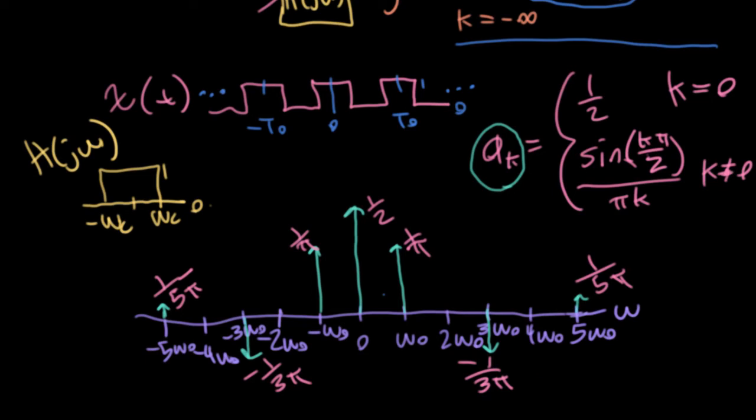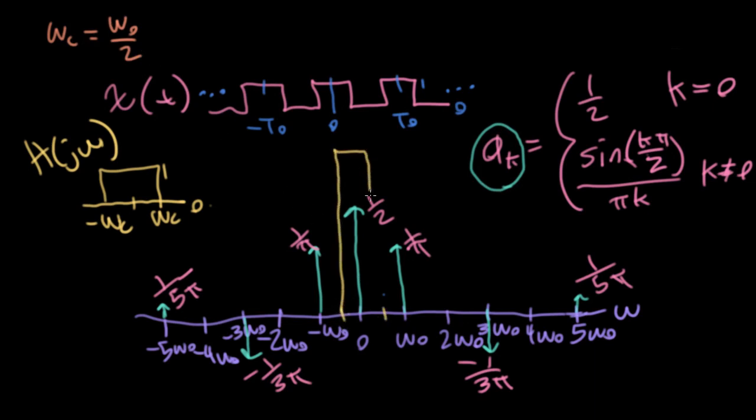All right, so what are we going to get for different values? Well, it depends on what ωc is. If we tried ωc equal ω₀ over two, for instance. So in this case, our filter function would look something like this. It has a height of one. I'm not really drawing this to scale, but I just want to figure out what's in here. Well, this is just going to have the DC value. So the output in this particular case, if we're just including that DC coefficient, let me call this y₀ just to have something to call it. It's just going to equal one half. It's going to equal the a₀ that's sitting here.